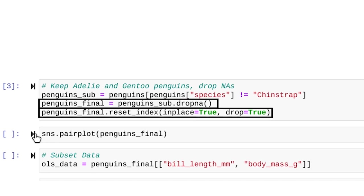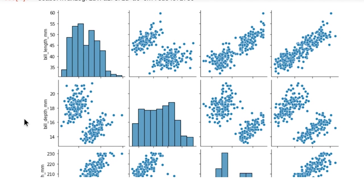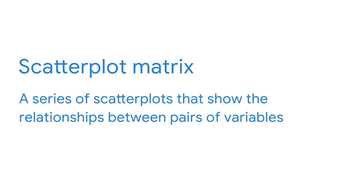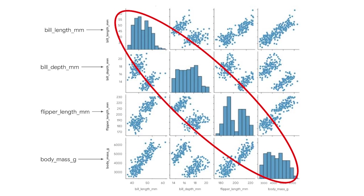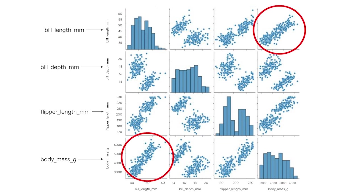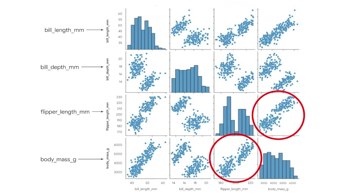You can access the code to see how the data is cleaned — subsetting the data to include only two species of penguin and dropping a couple of rows with missing data. Now you can start creating plots to identify some linear relationships between the continuous variables. The clean data is saved in a data frame called penguins_final. Input the data frame into Seaborn's pairplot function. A scatter plot matrix is a series of scatter plots that show the relationship between pairs of variables. By using the pairplot function, you will observe a few linear relationships in the scatter plots. The diagonal displays the distribution of the continuous variables, ensuring the data has met the linearity assumption. Bill length and body mass seem to be positively correlated, as do flipper length and bill length, and body mass and flipper length.